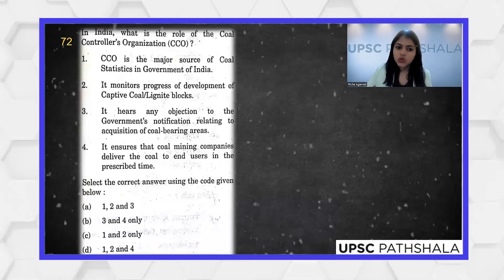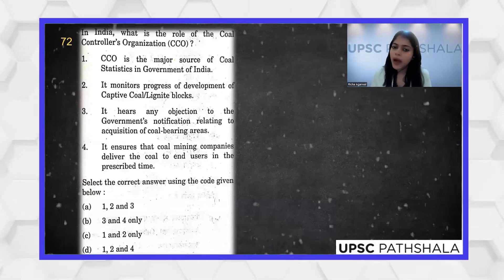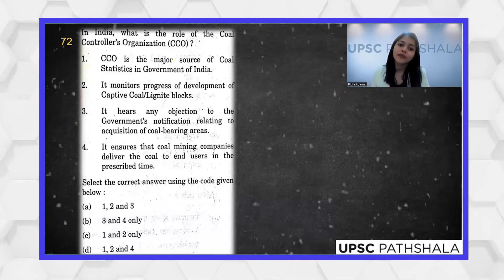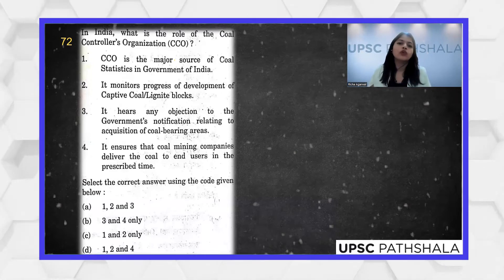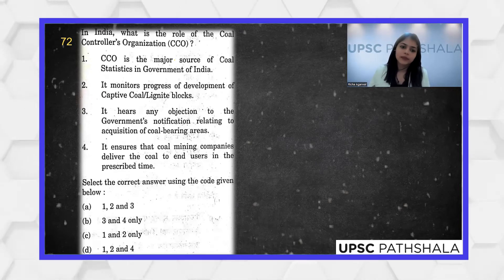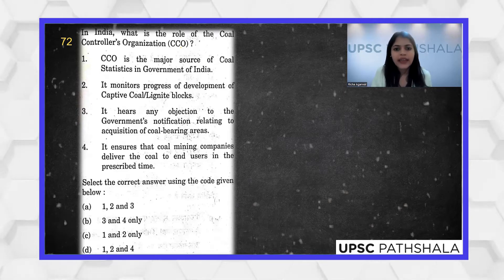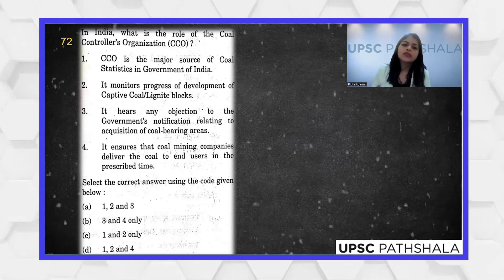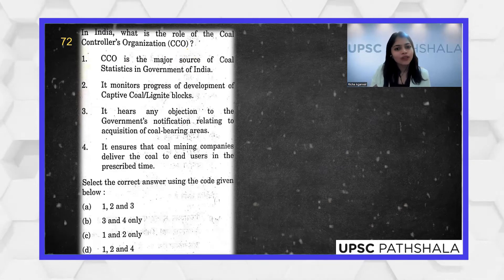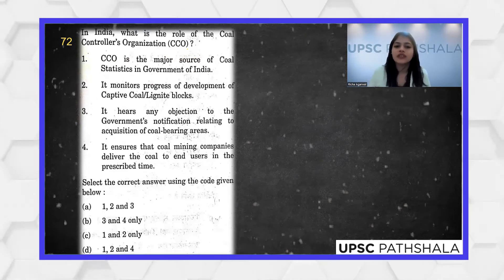What is the role of the Coal Controllers Organization? This year our country faced a glaring coal crisis — thermal power plants were left with just four days of coal in October, and again in February-March we often heard about coal shortages. Any organization related to coal became important. The Coal Controllers Organization often released data on the grade and quality of coal, and it is a major source of coal statistics for the Government of India.